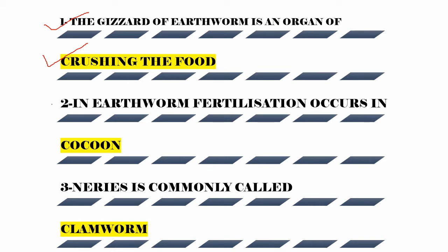The second question is: in earthworm, fertilization occurs where? Earthworm fertilization occurs in the cocoon. The answer is cocoon, meaning it is external fertilization occurring in the cocoon.